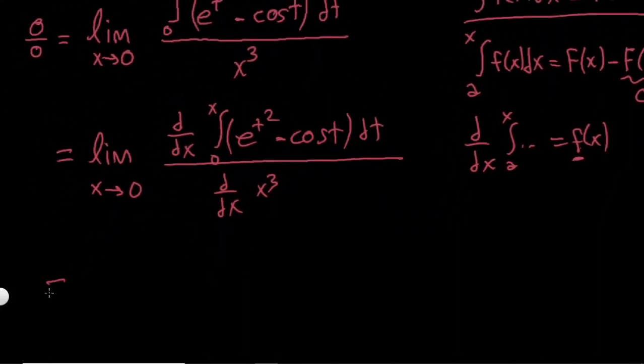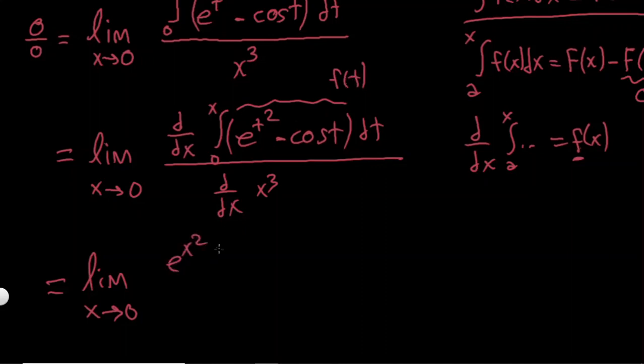So if I take derivative, instead of t I'm just going to put x, that's it, in the function. So here the function, this function is like f of t, and so I'm going to write f(x). So I have e to the x squared minus cosine x over, and if I differentiate this thing, it's going to be 3x squared.